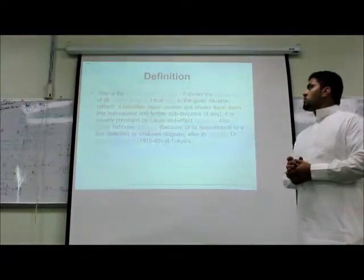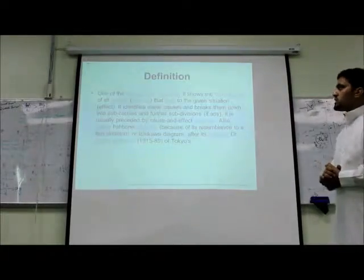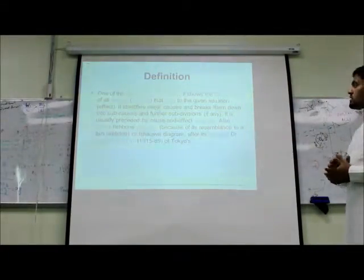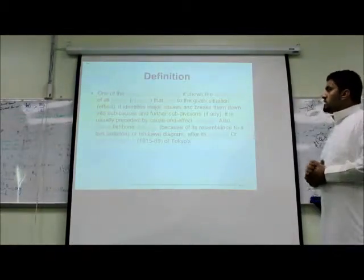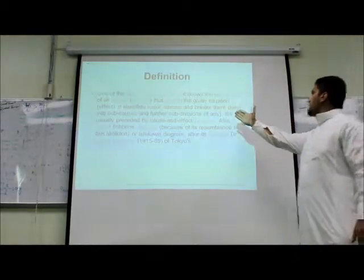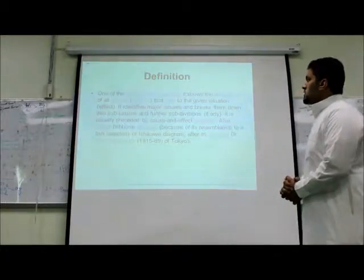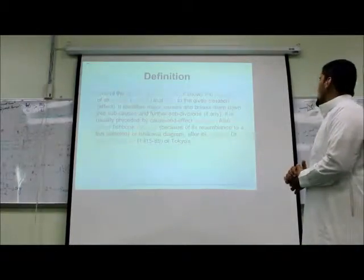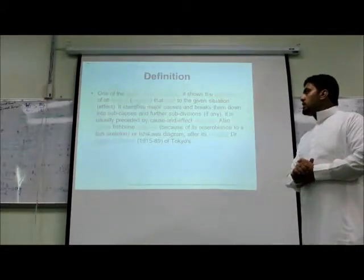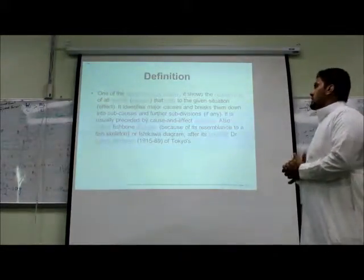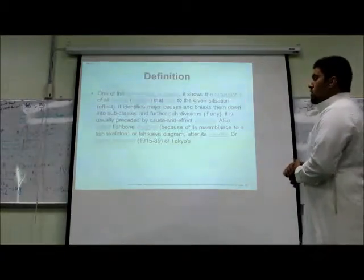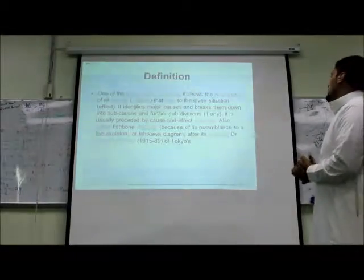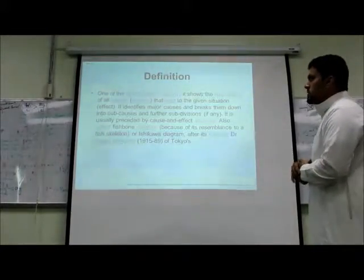Definition: One of the seven tools of quality, it shows the relationship of all factors or causes that lead to a given state or effect. It identifies the major causes and breaks them down into sub-causes and further sub-divisions if any. It's usually preceded by cause and effect analysis, also called fishbone diagram because of its resemblance to a fish skeleton.